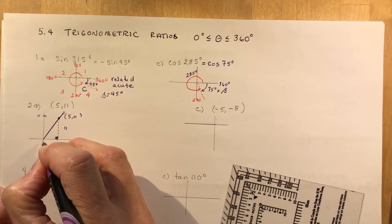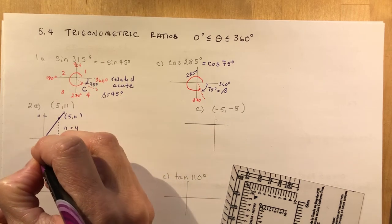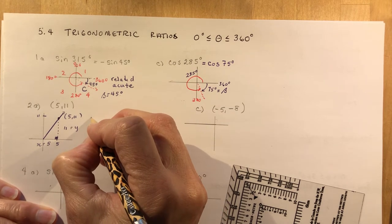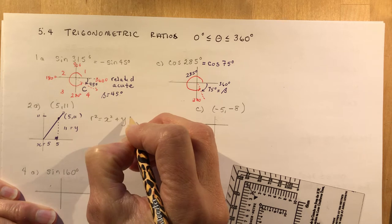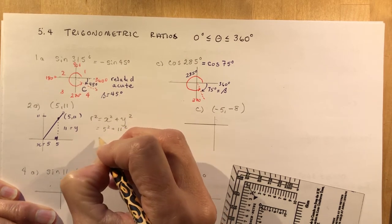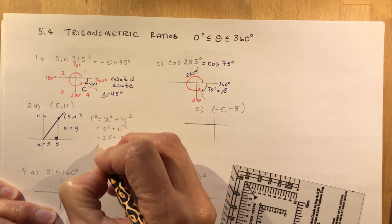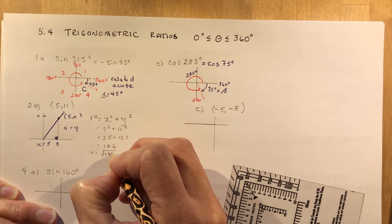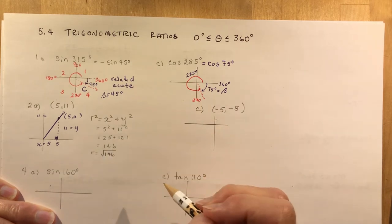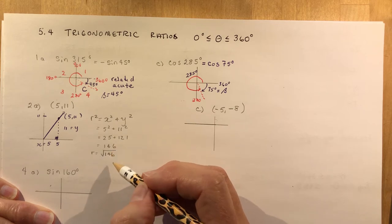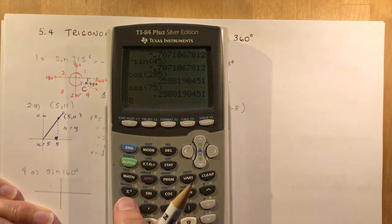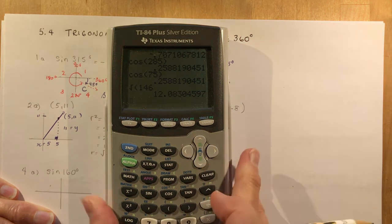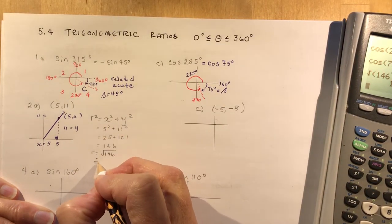My height is 11, my x value is 5. So y = 11 and x = 5. They want you to find r using the Pythagorean theorem: r² = x² + y² = 5² + 11² = 25 + 121 = 146. So r = √146. To the nearest tenth, that's approximately 12.1.